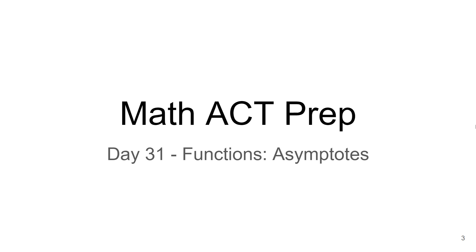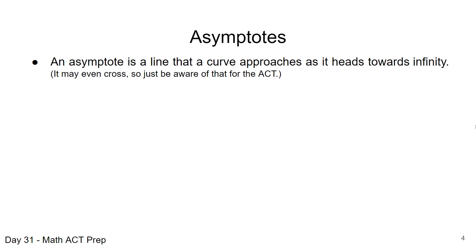In this video we're going to talk about asymptotes, and most of the time these questions show up as being categorized as functions on the ACT. When we're talking about an asymptote, this is a line that a curve approaches as it heads towards infinity. Most of the time we say it approaches but never touches, though there are always special cases where lines do cross an asymptote. Most things you'll see on the ACT probably will not, however.